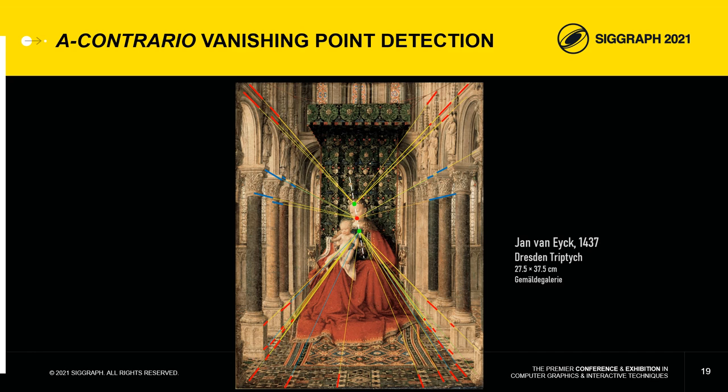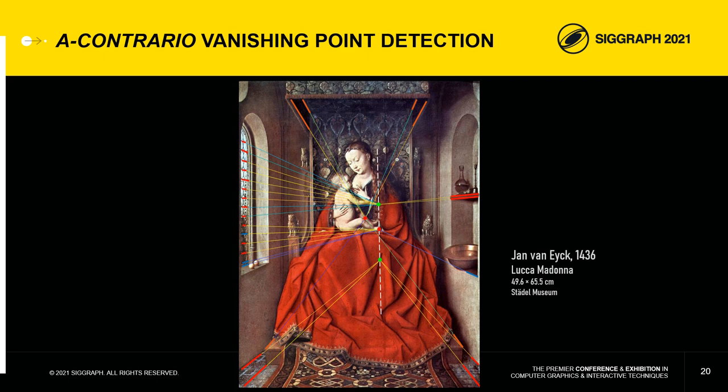Applying this method to four other paintings by Van Eyck, we obtain vanishing point patterns similar to that of the Arnolfini portrait. Here in the Dresden triptych, three vanishing points are aligned periodically along an inclined vertical axis. The same applies to the Luca Madonna painted by Van Eyck in 1436, where this pattern is accompanied by a perspectival collage at the level of the chair.